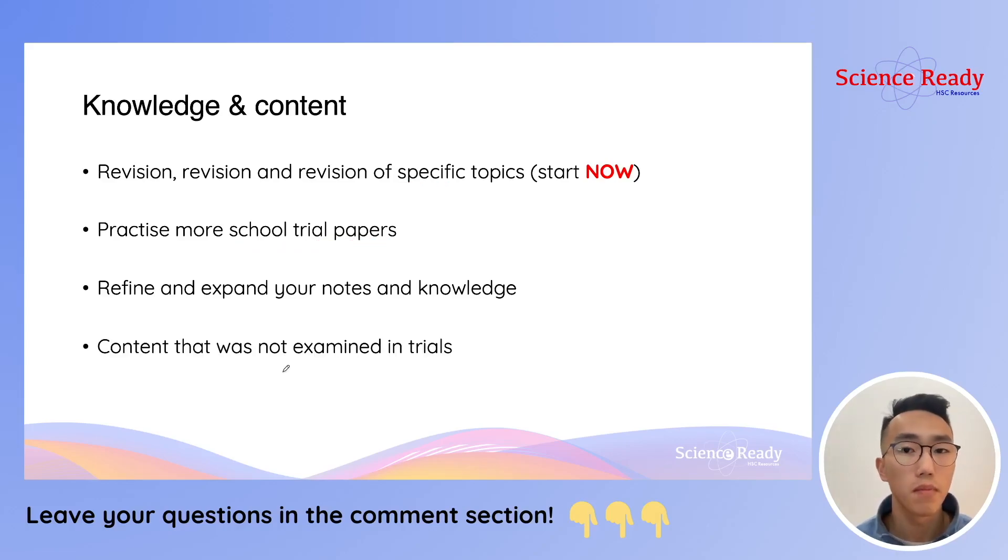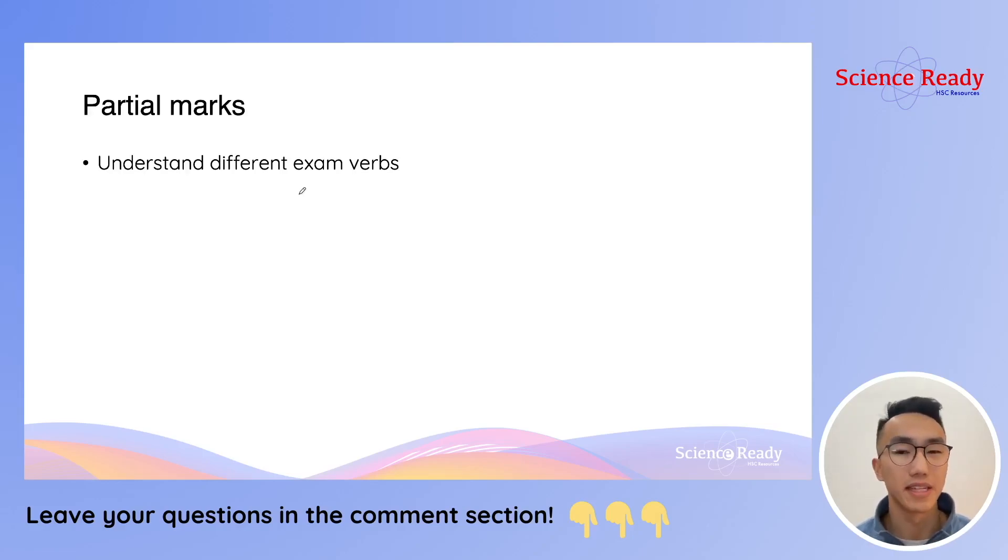Now for many school trial exams, you may not have been examined on all the topics or all the inquiry questions in chemistry and physics syllabus. So you should also spend some time making notes for the content that was not examined and then reconsolidating your understanding through doing trial exam paper questions that are targeted at these particular topics. The second issue that students often experience is gaining partial marks on questions, especially in the trial exam. Now gaining partial marks or losing partial marks on one question won't significantly affect your school trial performance. However, what's more common is that students often lose partial marks across multiple questions which then accumulate to add up to a more substantial effect on your performance.